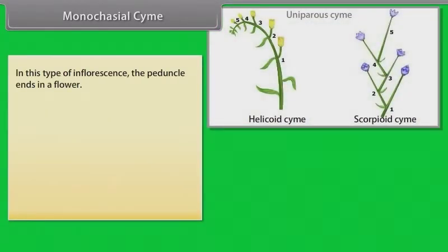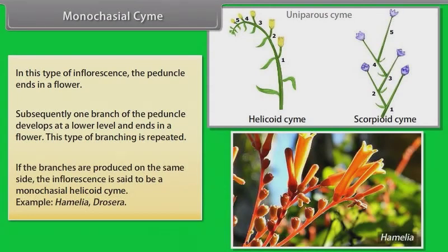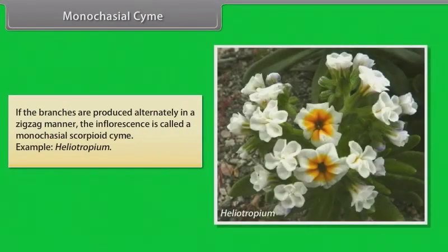In monocasial cyme, the peduncle ends in a flower. Subsequently, one branch of the peduncle develops at a lower level and ends in a flower; this type of branching is repeated. If the branches are produced on the same side, the inflorescence is a monocasial helicoid cyme. Example: Hamelia, Drosera. If the branches are produced alternately in a zigzag manner, it is called a monocasial scorpioid cyme. Example: Heliotropium.